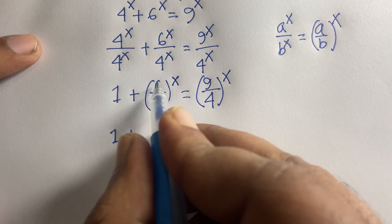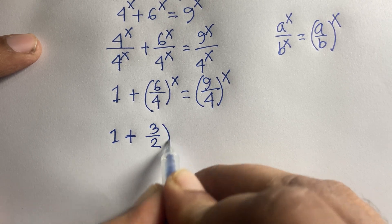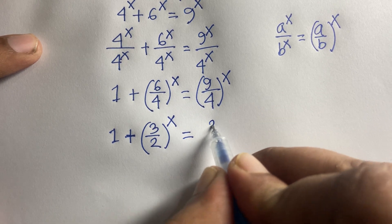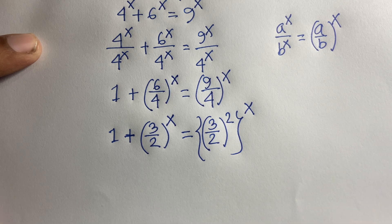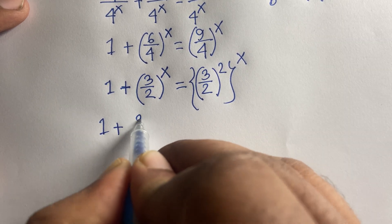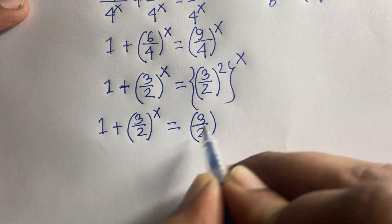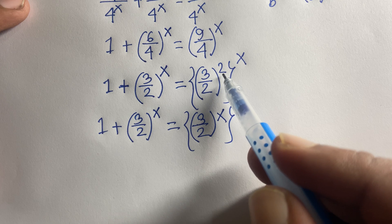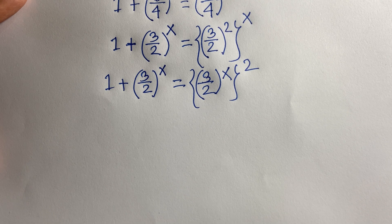Now I simplify: 6 over 4 reduces to 3 over 2, so we have (3/2)^x. And 9 over 4 is equal to (3/2)^2, so (9/4)^x becomes (3/2)^(2x). The equation becomes 1 plus (3/2)^x is equal to (3/2)^(2x), applying the exponential rule to move the exponents.